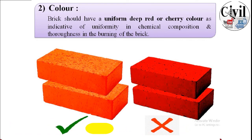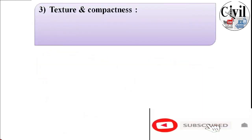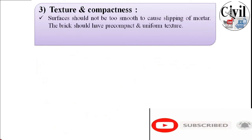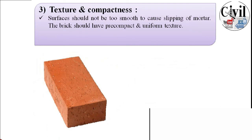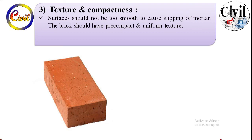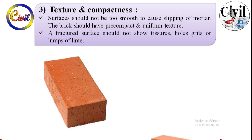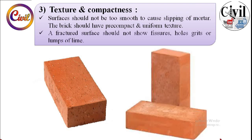Third is texture and compactness. The surface of a good quality brick should not be too smooth, as it can cause slipping of mortar. The brick should have a compact and uniform texture. The fractured surface should not show fissures, holes, grits, or lumps of lime.